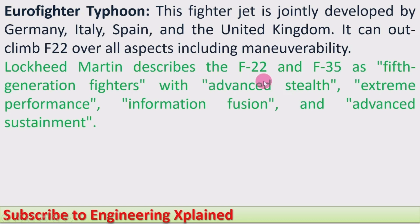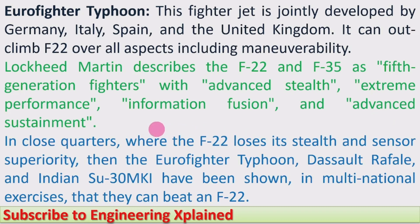Lockheed Martin describes the F-22 and F-35 as fifth-generation fighters with advanced stealth, extreme performance, information fusion, and advanced sustainment. In close quarters, where the F-22 loses its stealth and sensor superiority, the Eurofighter Typhoon, Dassault Rafale, and the Indian Su-30MKI have been shown in multinational exercises that they can beat an F-22.